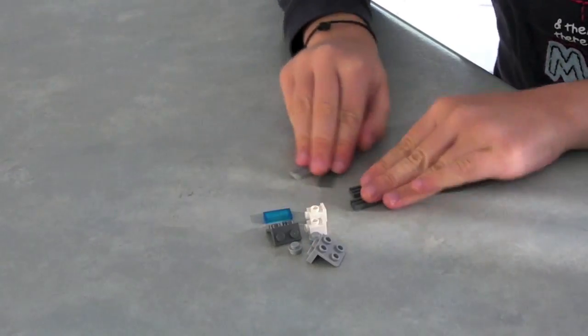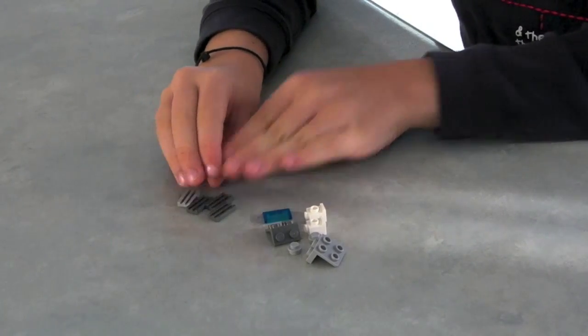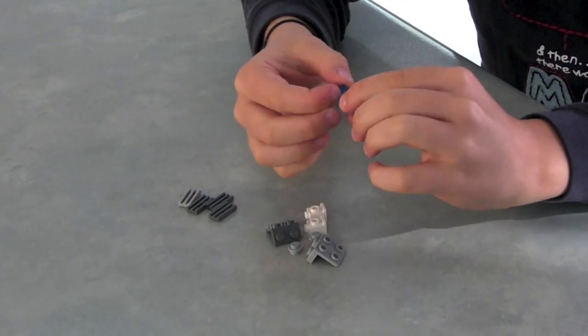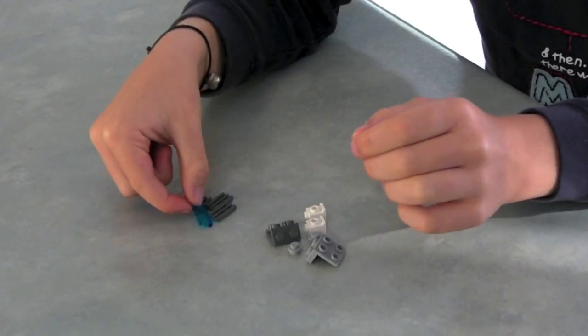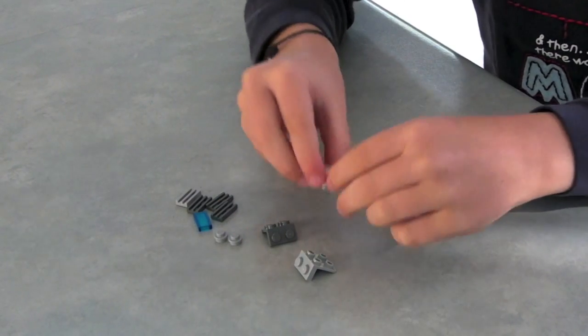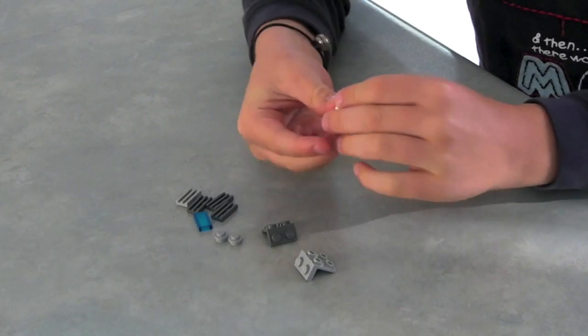So you'll need four vent bricks, one flat 1x2 see-through blue smooth piece, two dots, and two weird traffic-like ones.